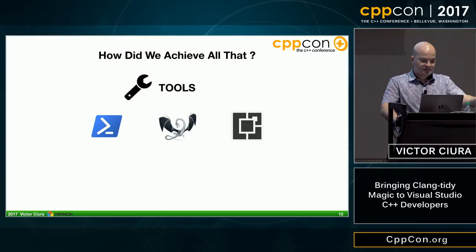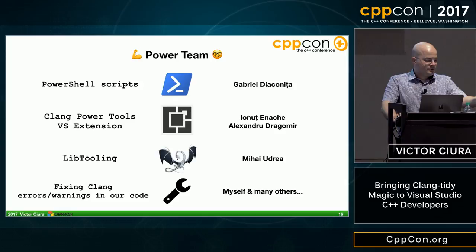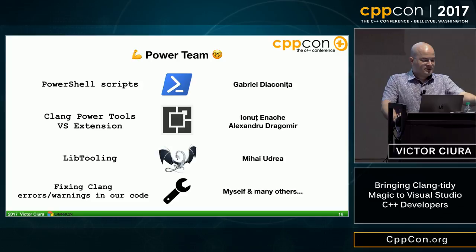How did we achieve all that? Using tools, of course: our PowerShell scripts, our custom lib tooling implementations, and our Visual Studio extension. I have to give a shout-out to some of my teammates who helped tremendously — Gabriel, my PowerShell wizard, helped develop our PowerShell scripts and Visual Studio extension as well as our custom tools built on lib tooling. Many other teammates helped fixing errors and warnings in our source code. It was really a big effort.